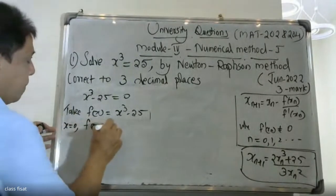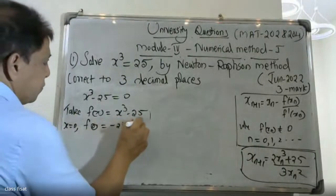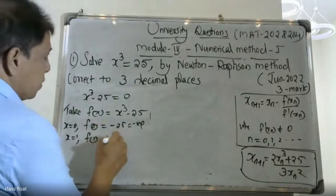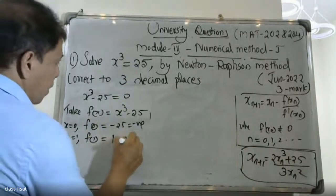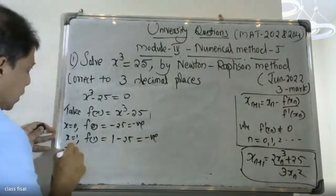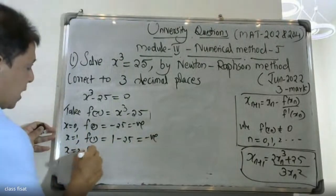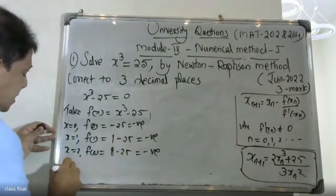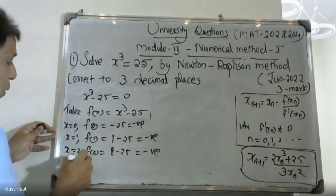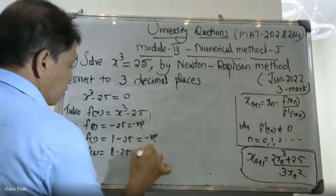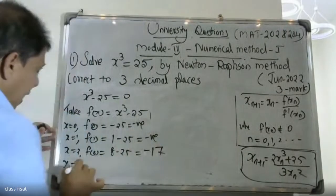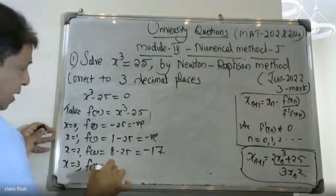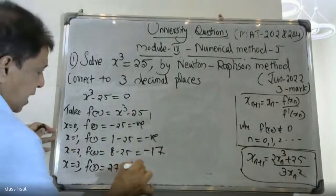To find the initial approximation: if x equals 0, f(0) is minus 25, which is negative. If x equals 1, f(1) equals 1 minus 25, which is negative. If x equals 2, f(2) equals 8 minus 25, which is again negative. If x equals 3, f(3) equals 27 minus 25 equals 2, which is positive.